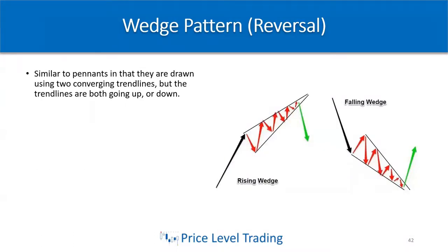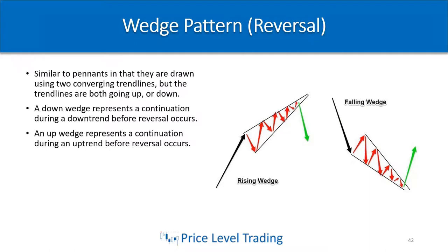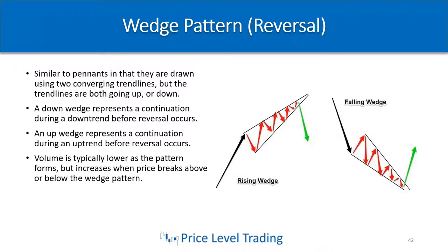Now let's talk about some reversal patterns. The first is the wedge pattern as a reversal — similar to pennants, drawn using two converging trend lines both going up or down. A falling wedge represents a continuation during a downtrend before reversal occurs, and an up wedge represents a continuation during an uptrend before reversal occurs. Volume is typically lower as the pattern forms but increases when price breaks above or below the wedge. The reason I love this pattern is because you can have a very sharp reversal due to trapped traders chasing price higher or lower before it instantly reverses on them.